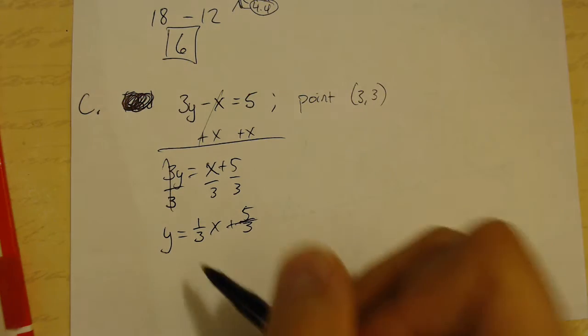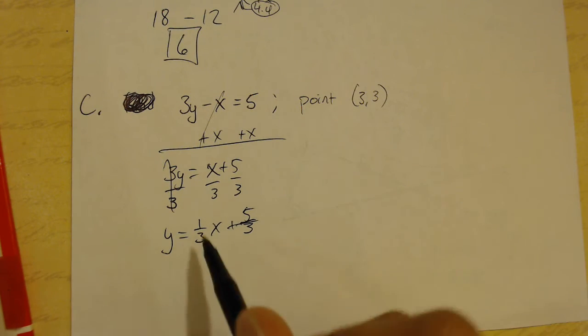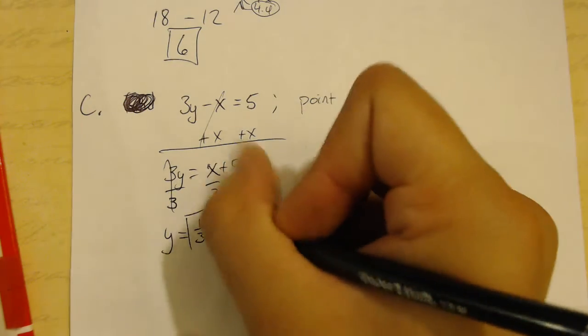And again, like I just said, we're solving this for the slope. Since the line that we're looking for is parallel to this line, we're going to take this slope.